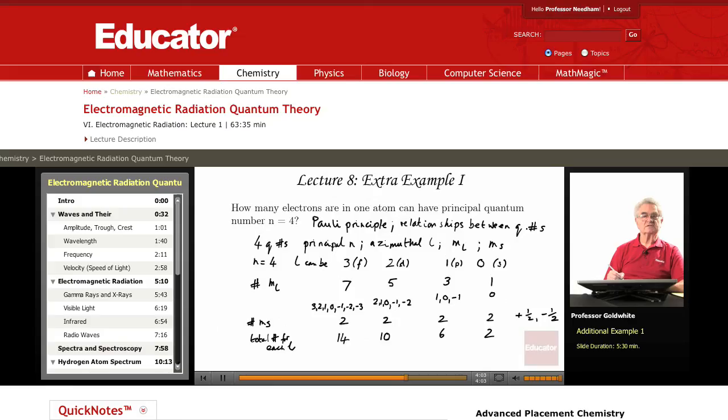2 possibilities. So the total number of electrons with n equals 4 could be the sum of all these, which equals 32.